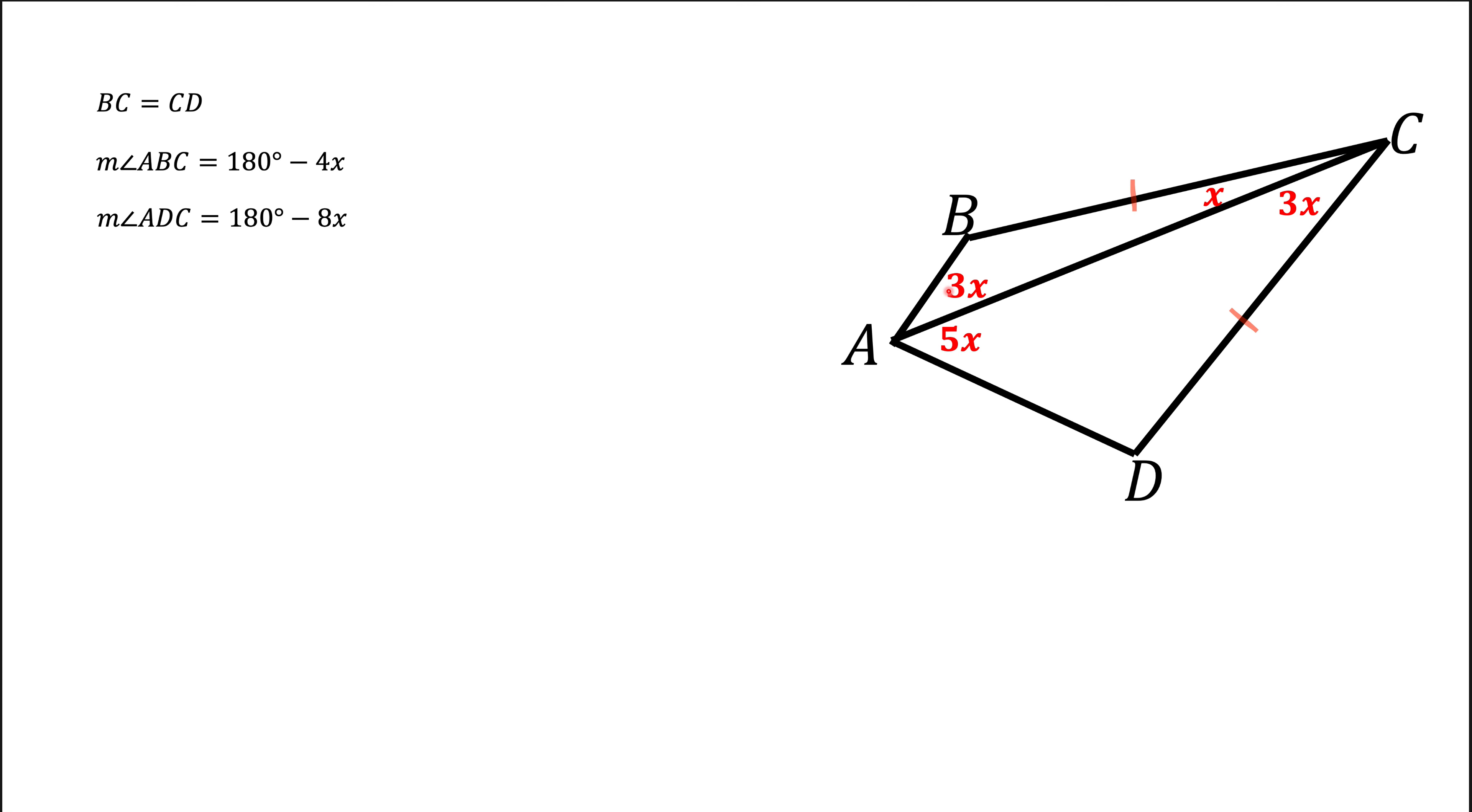Now we're going to invoke the law of sines. To remind you, the law of sines says that in an arbitrary triangle, sine of an angle divided by the opposite side is the same for all three angles. So we can say that sine of this angle 3x divided by the opposite side BC is the same as sine of angle B, which is 180 minus 4x, divided by the opposite side AC.